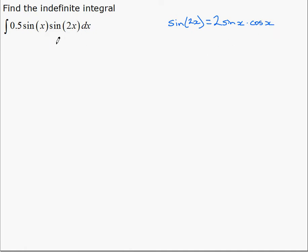So, since we need to make our arguments the same for our sine functions, we're going to start by replacing sine 2x with this. That gives us the integral of 0.5 sine x, multiplied by that, which is 2 sine x cosine x. And, a little simplification here, 2 and a half cancel, we end up with the integral of sine squared x cosine x dx.